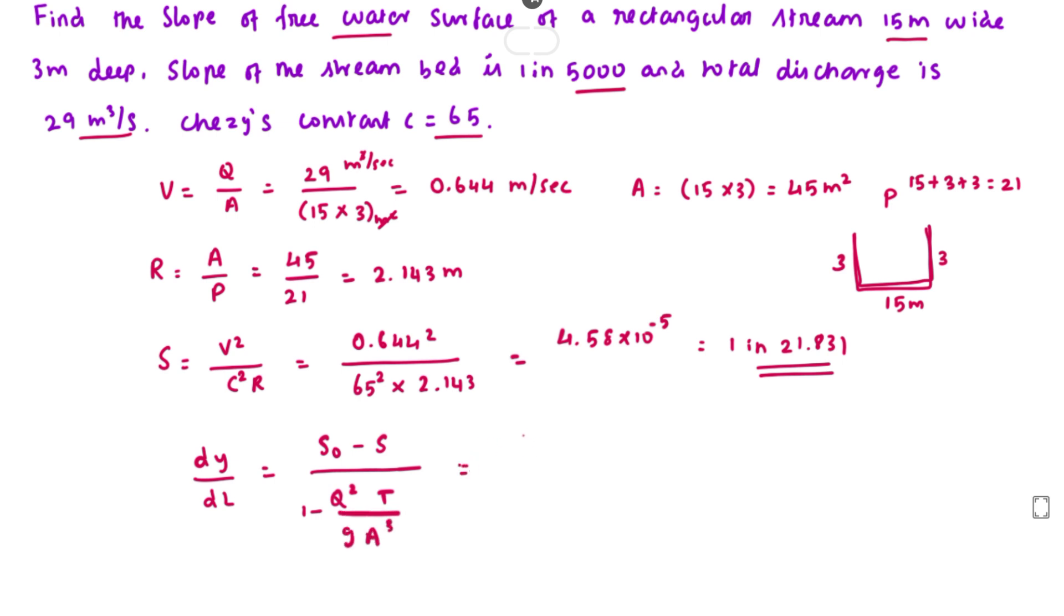Substituting all values: the slope is 1 in 5000 minus 4.58 × 10⁻⁵, divided by 1 minus (29² × 15)/(9.81 × 45³).